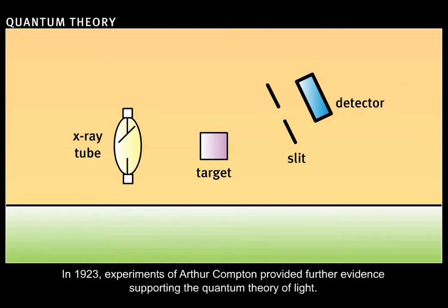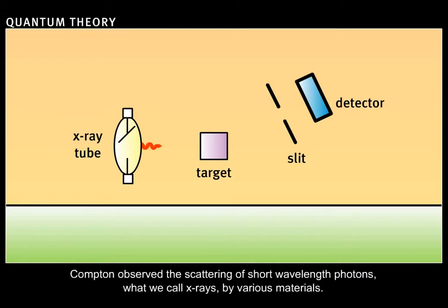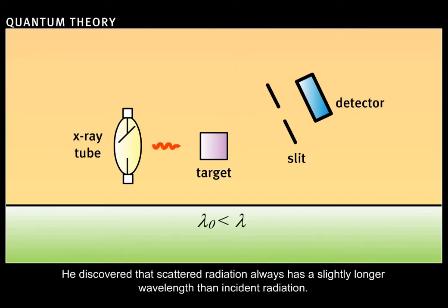In 1923, experiments of Arthur Compton provided further evidence supporting the quantum theory of light. Compton observed the scattering of short wavelength photons, what we call x-rays, by various materials. He discovered that scattered radiation always has a slightly longer wavelength than incident radiation.